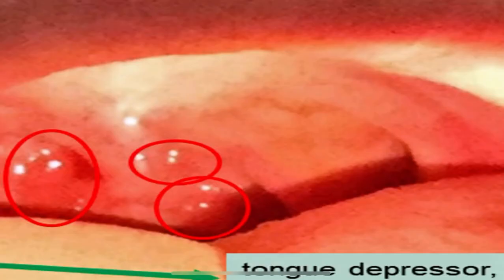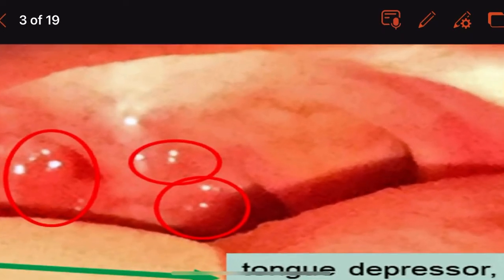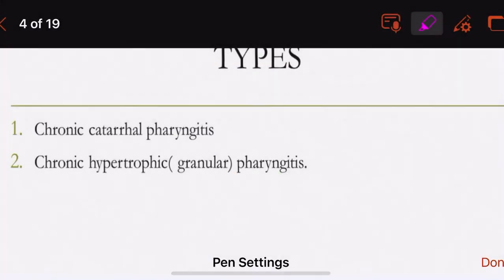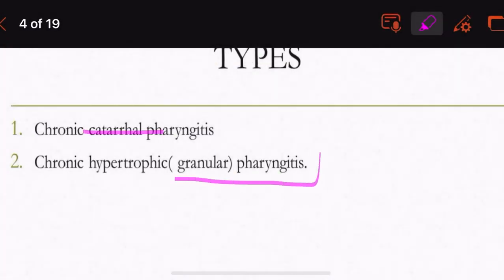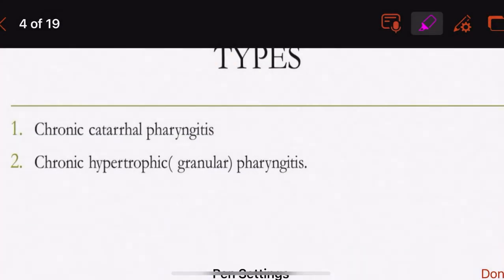Now let us look into the types of chronic pharyngitis. There are two types: chronic catarrhal pharyngitis and chronic granular pharyngitis — that is, the hypertrophic type. So one is catarrhal pharyngitis and the other is granular pharyngitis.